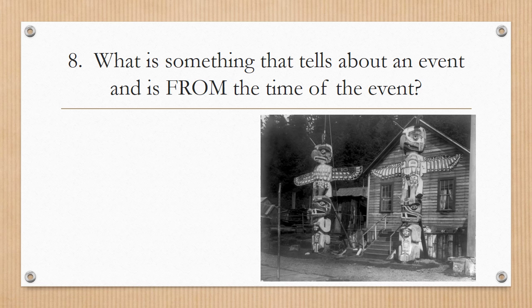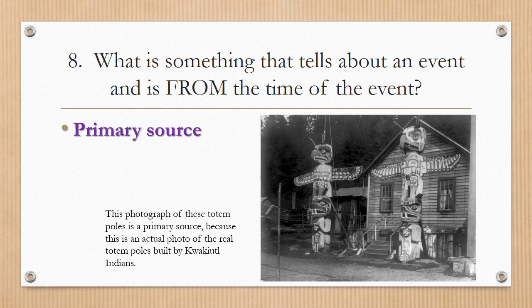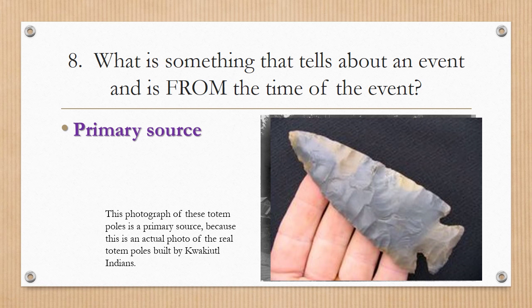Number eight: what is something that tells about an event and is from the time of the event? A primary source. This photograph of totem poles is a primary source because it is an actual photo of the real totem poles built by the Kwakiutl Indians. Most photographs are primary sources because they capture the event or image from that time. An arrowhead would also be a primary source from Native American cultures — it's the actual piece that would have been used by the Indians at that time.